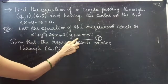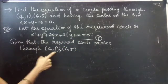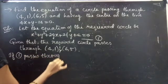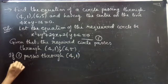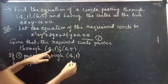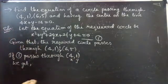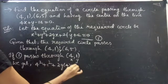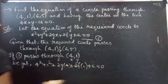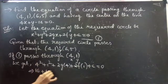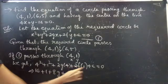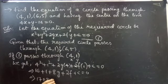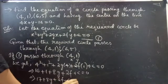If equation 1 passes through the point (4, 1), put x = 4 and y = 1 in equation 1. We get 4² + 1² + 2·g·4 + 2·f·1 + c = 0, which gives 16 + 1 + 8g + 2f + c = 0, that is 17 + 8g + 2f + c = 0. Consider this as equation 2.